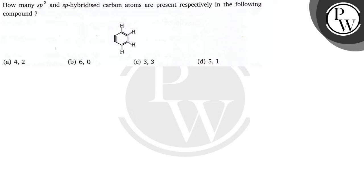Hello, let's read the question. The question says: how many sp2 and sp hybridized carbon atoms are present respectively in the following compound? The options are: (a) 4, 2; (b) 6, 0; (c) 3, 3; and (d) 5, 1. Let's do the question.